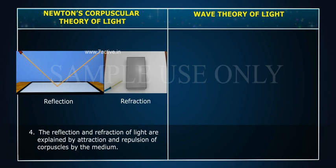Point 4: The reflection and refraction of light are explained by attraction and repulsion of corpuscles by the medium.